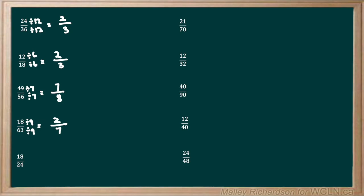Now we have 18 over 24. Again, what's the highest multiple that can go into both? We know that that's 6, so we divide our top and bottom by 6. 18 divided by 6 is 3 and 24 divided by 6 is 4. 3 quarters cannot be reduced down any further, so 3 quarters is our final answer.